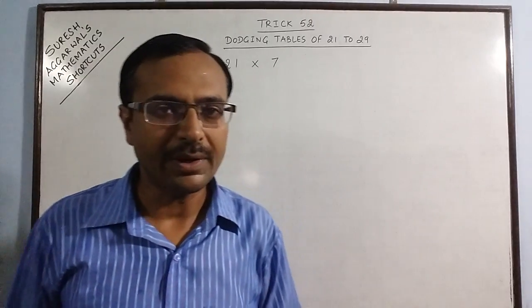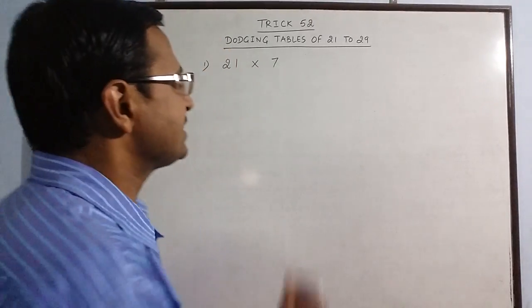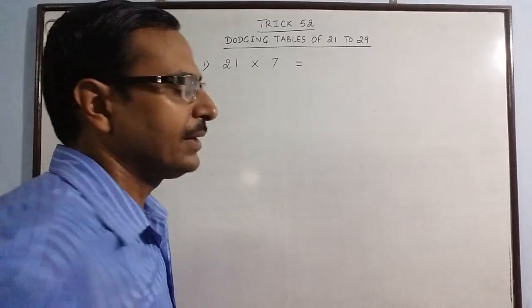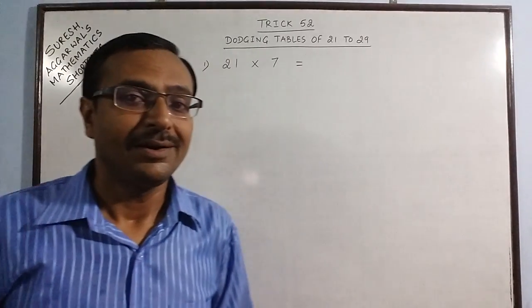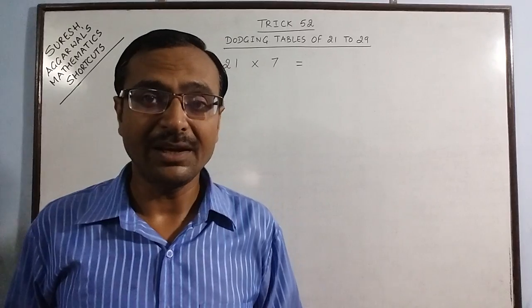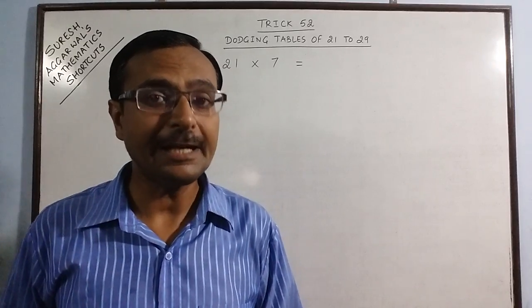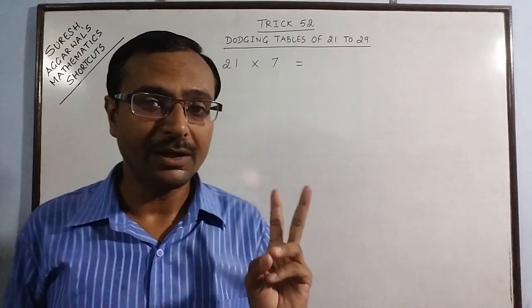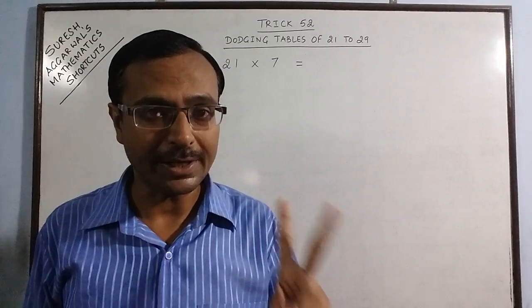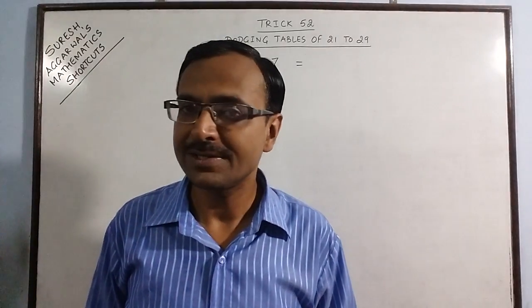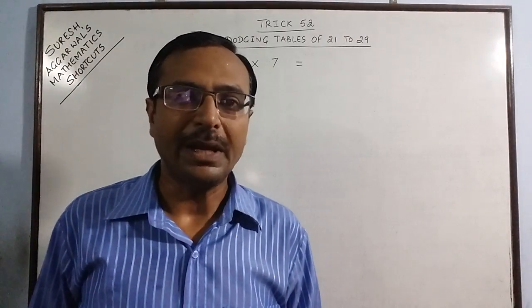Now it is nearly impossible for the child to count the table of 21 up to 7 or add 21 seven times. So this basic method will tell the child a basic thing through which he can tell this product in a matter of just 2 seconds.